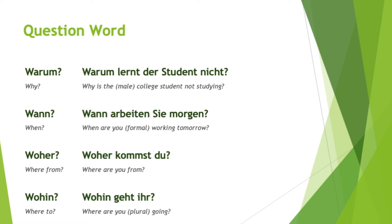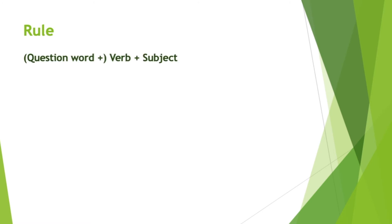Just to recap: 'wo' means 'where,' but 'woher' and 'wohin' are other types of 'where' that you don't really have in English. There are a few more question words like 'which' and 'whom,' but I'm not going to go over those to keep the lesson shorter. The rule is: first put the question word if there is one, then the verb, then the subject — the person doing the action. There won't be a question word if it's a yes/no question.